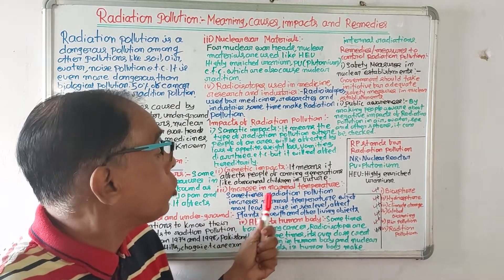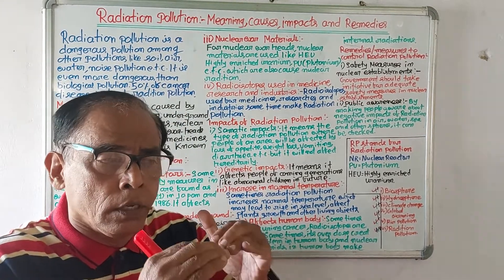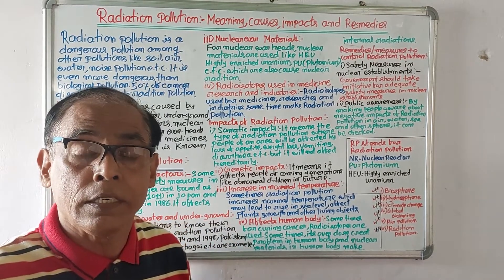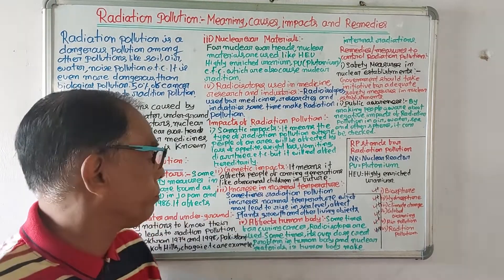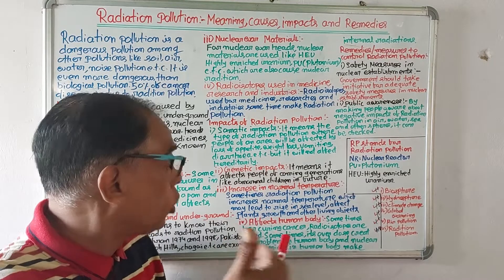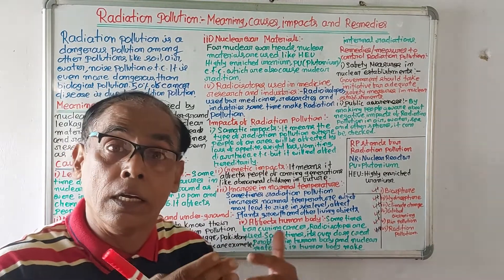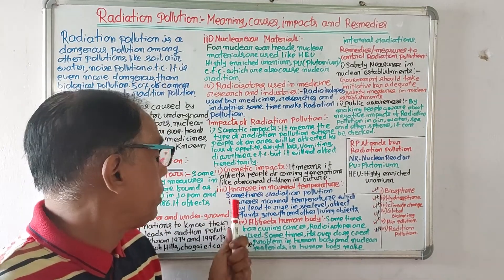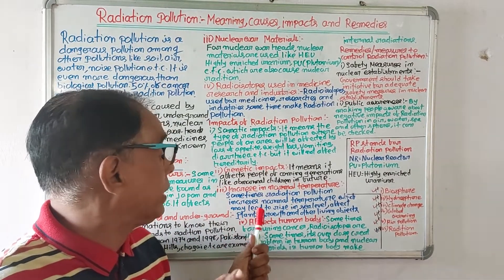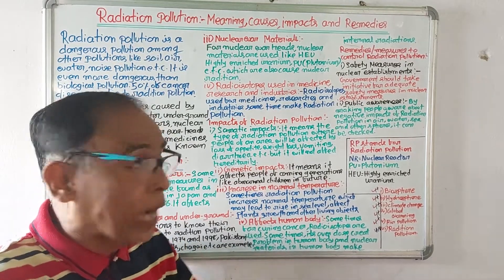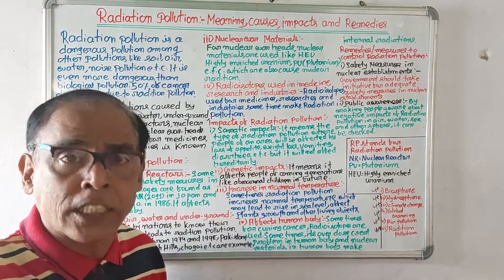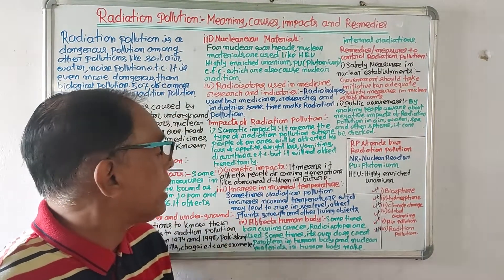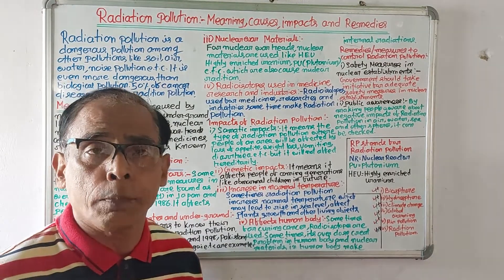Number three: increase in normal temperature. If there will be radiation pollution, temperature will increase. If temperature increases, it leads to a rise in sea level and it affects the growth of plants and living objects. Sometimes radiation pollution increases normal temperature, which may lead to rise in sea level and affects plant growth and growth of living objects.